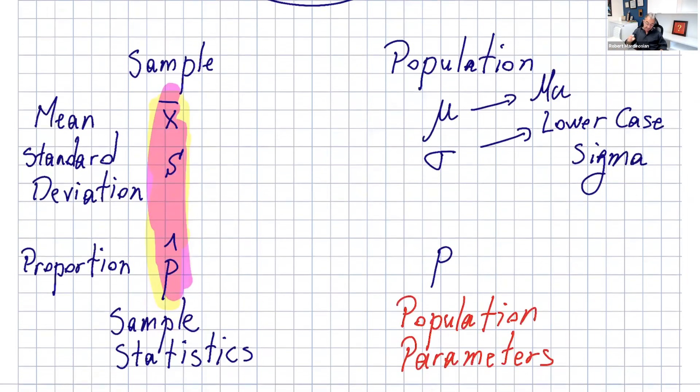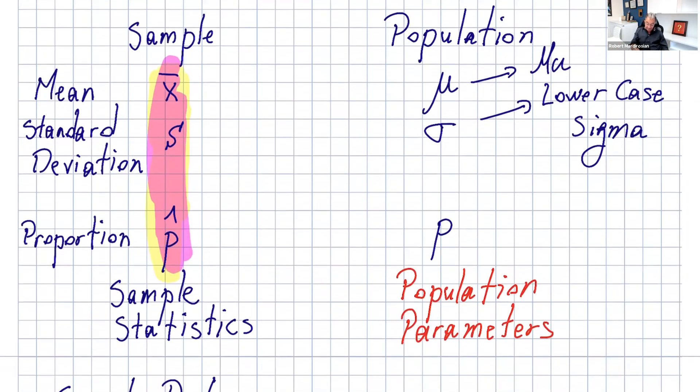Now, coming to the sample, we have sample statistics. First, we have the sample mean, which is the average, and the notation is X bar. Then we have sample standard deviation, which is S. And we have the sample proportion, which is P hat. Proportion is just the percentages.